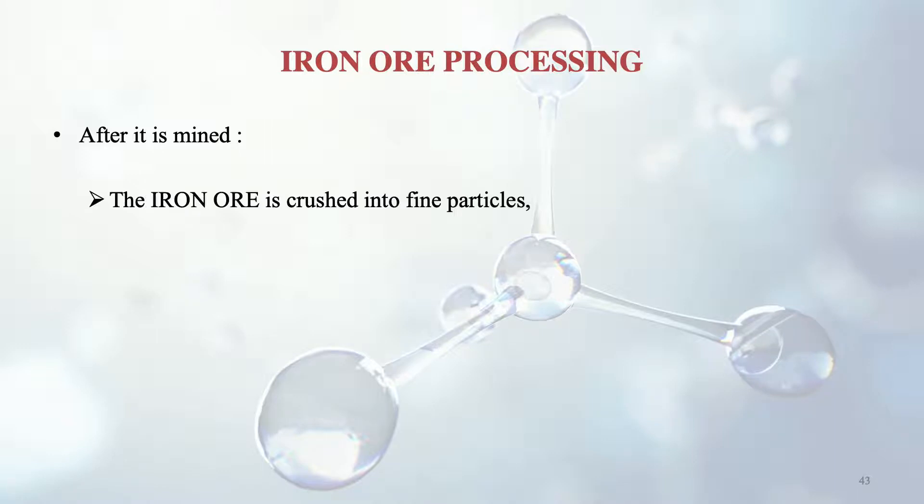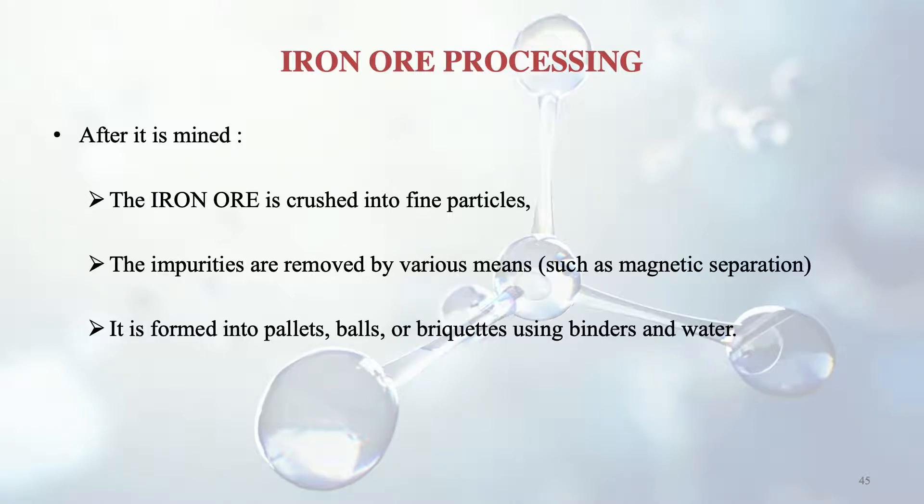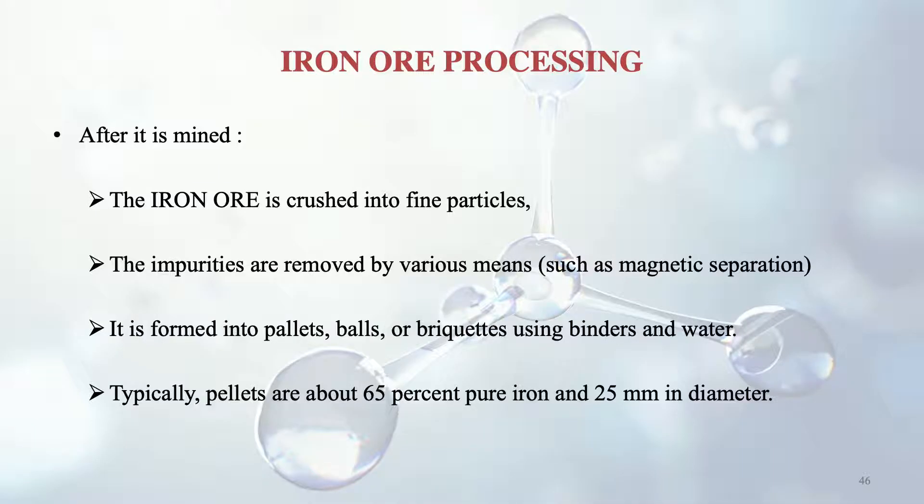After the iron ore is mined, it is crushed into very fine particles and impurities are removed by various means, including magnetic separation. It is then formed into pellets, balls or briquettes using binders and water. Typically, pellets are about 65% pure iron and 25 mm in diameter.